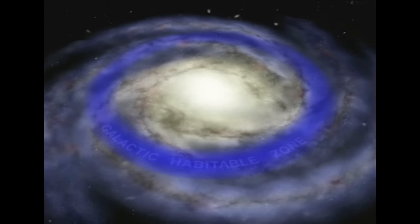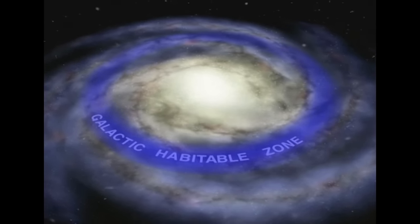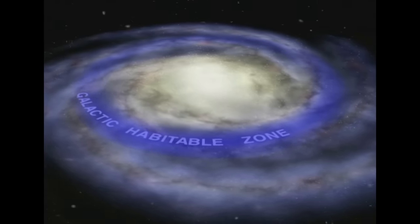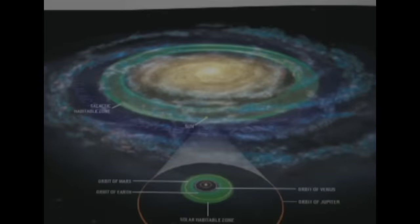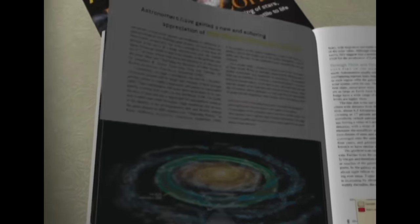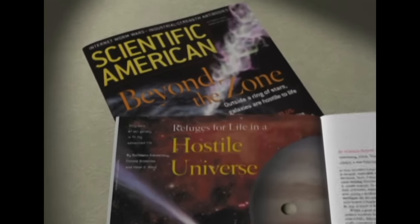So there's a happy median between the dangerous galactic center and the outer edge of the galaxy. Gonzalez, Brownlee, and Ward labeled this region where complex life is possible within the Milky Way the galactic habitable zone.